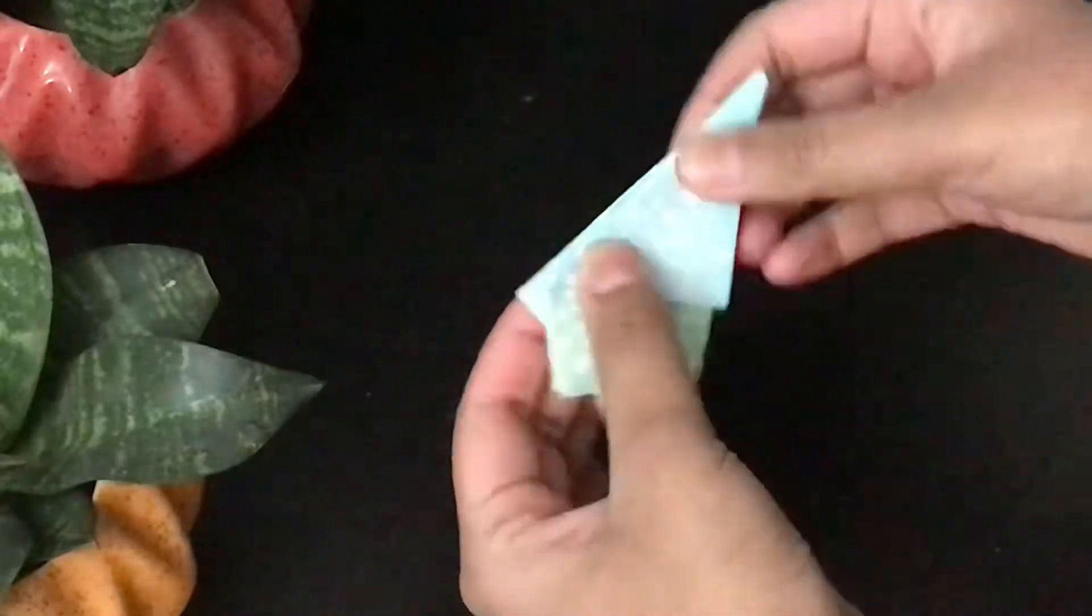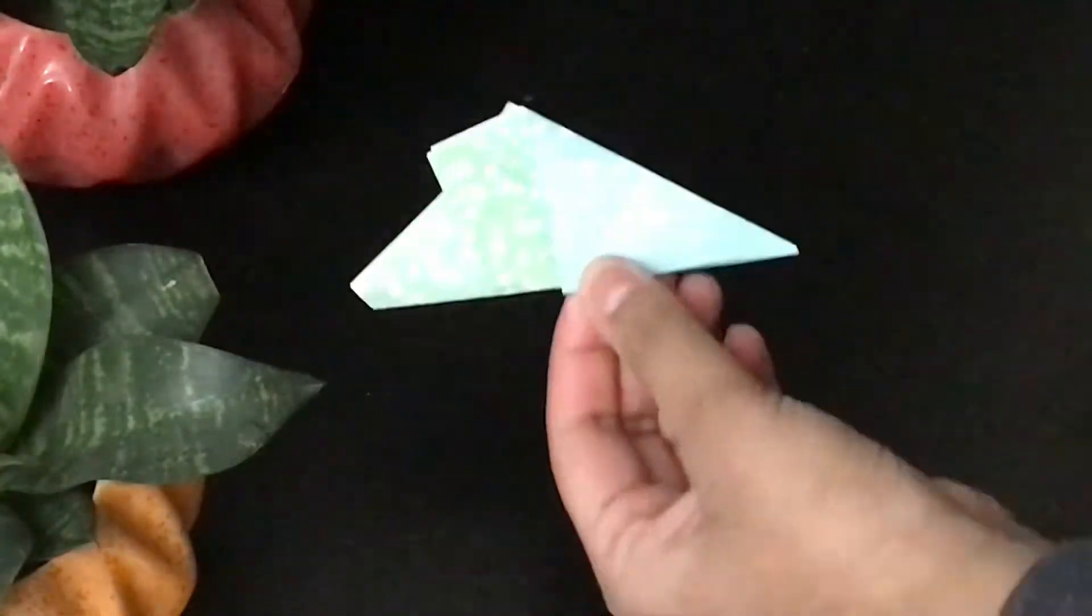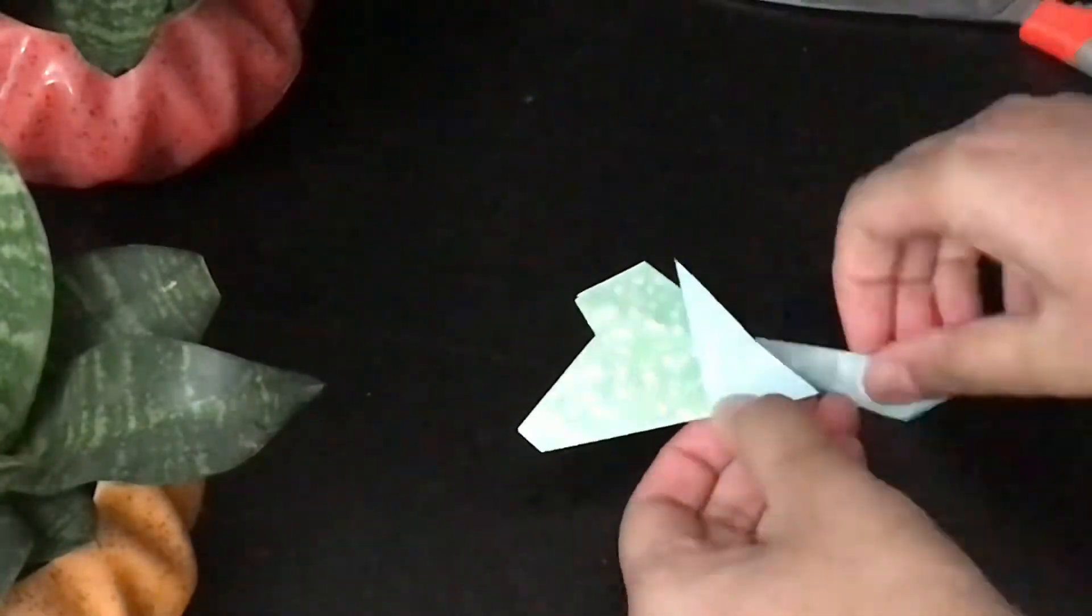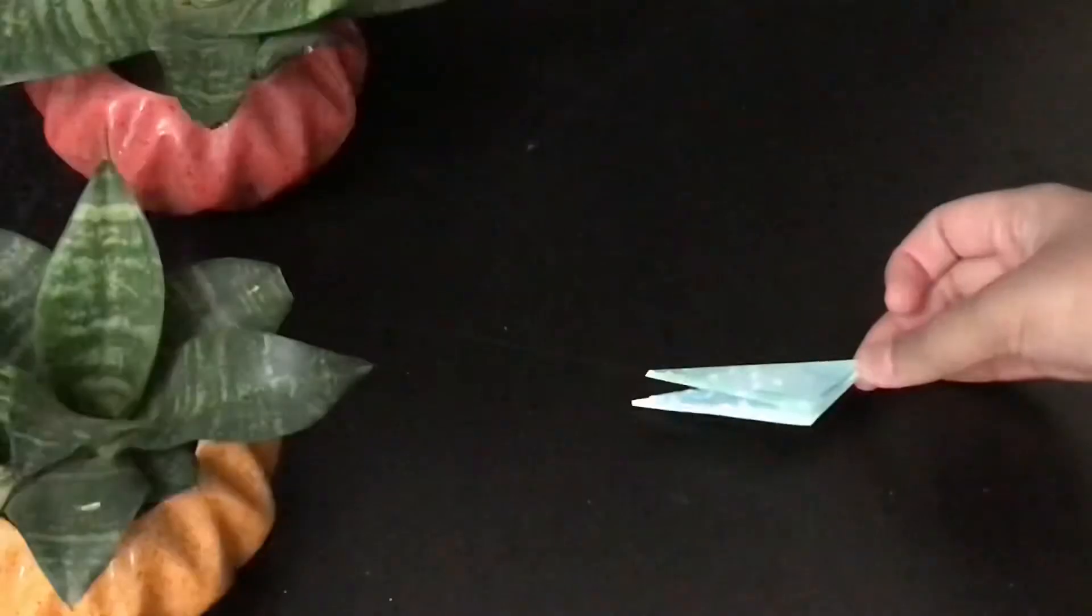Then, fold it from the middle. After that, we have to cut it diagonally using scissors. This is the part which we want.